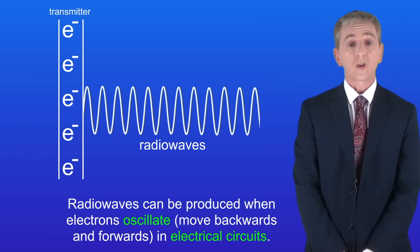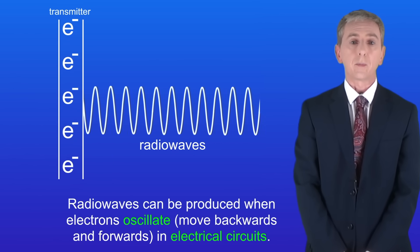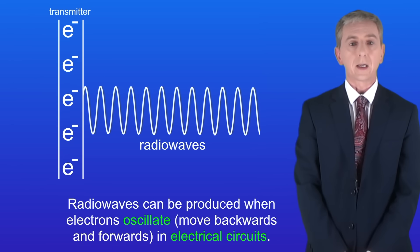Radio waves can be produced when electrons oscillate in an electrical circuit and the word oscillate means move backwards and forwards. I'm showing you that here.